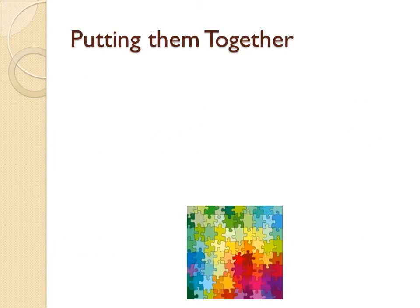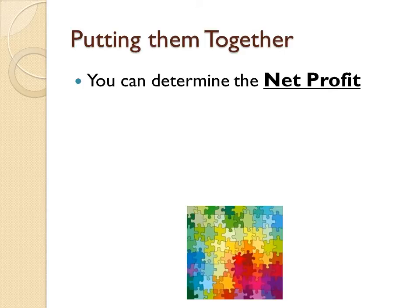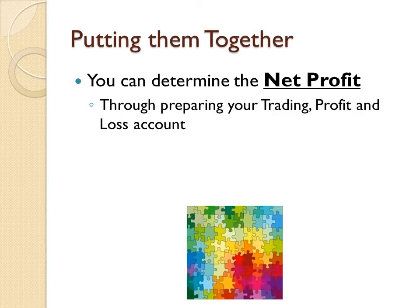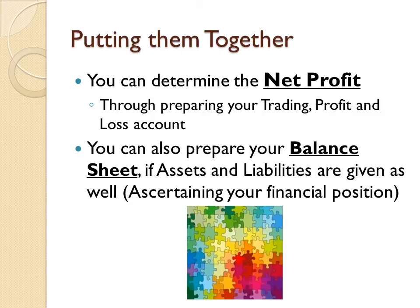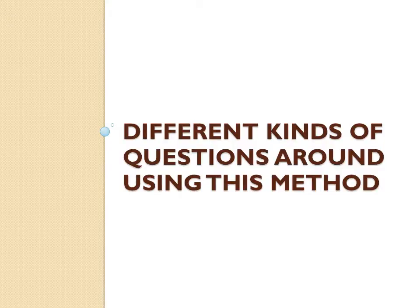Taking all the pieces — expenses, income, and so on — and putting them together, you can determine net profit through the trading profit and loss account. You can also prepare the balance sheet if assets and liabilities are given, which helps you ascertain the financial position of the business. There are many different kinds of questions using this method; in this lesson we will look at two.